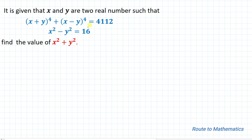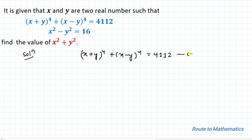Without any delay, let's start the solution. We have two equations. Our first equation is (x+y)⁴ + (x−y)⁴ = 4112, and our second equation is x²−y² = 16.